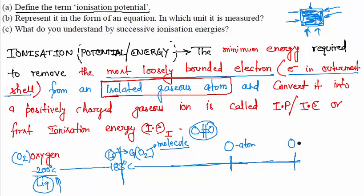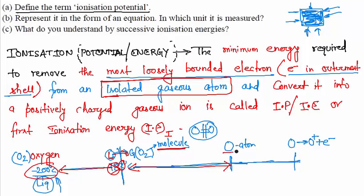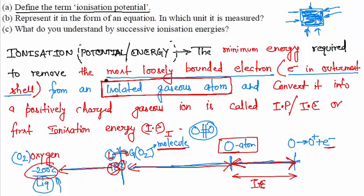As you continue giving heat, the oxygen molecule breaks into oxygen atoms. Then at some point, this oxygen atom loses an electron and converts into O⁺ plus an electron. The heat used in converting liquid to gas is latent heat of vaporization, and the heat breaking the molecule into atoms is dissociation energy — only the energy used to remove the electron from the isolated gaseous atom is the ionization energy.